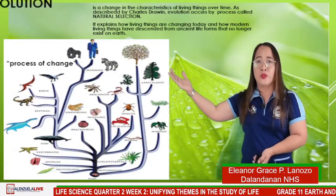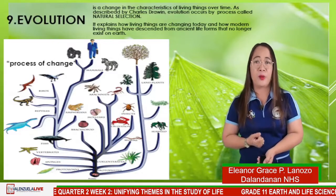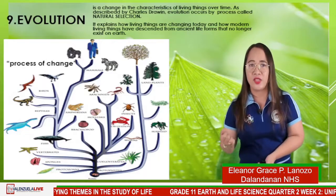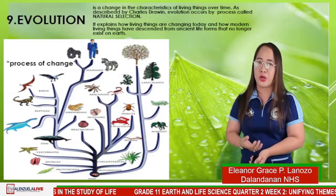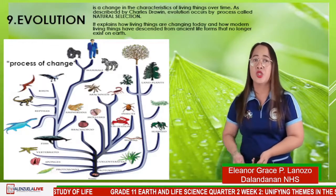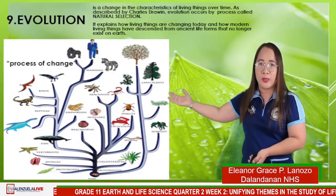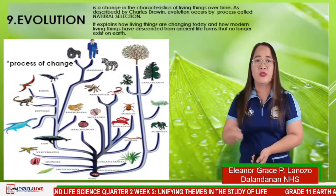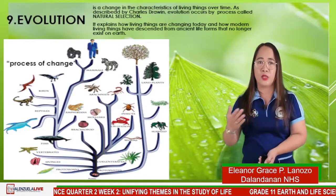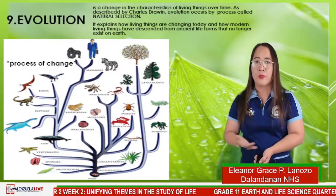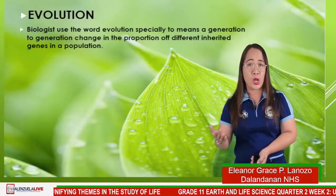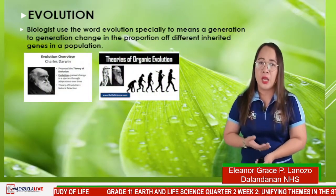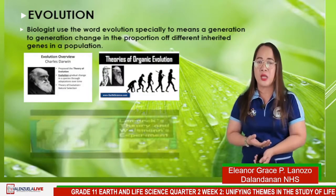For number nine, evolution — the process of change. It is a change in the characteristics of living things over time, as described by Charles Darwin. Evolution occurs by a process called natural selection. This explains how living things are changing today and how modern living things have descended from ancient life forms that no longer exist on Earth. Biologists use the word evolution to mean a generation-to-generation change in the proportion of different inherited genes in the population.